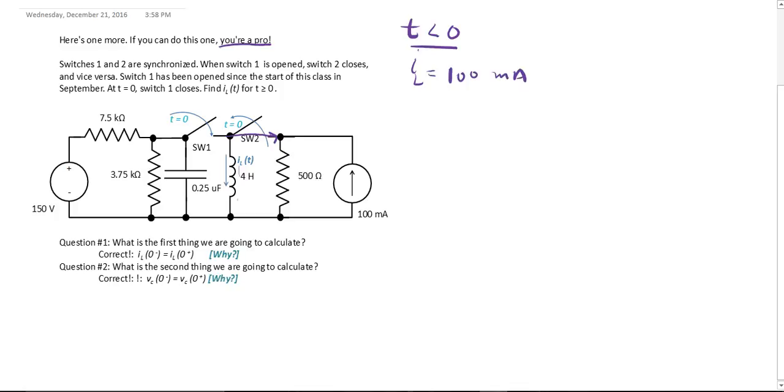And you want to calculate the VC, the voltage drop across the capacitor, is going to be the same as the voltage across this resistor because they are connected in parallel. And this switch was open. So VC equals to, you use a voltage divider equation. 150 times 3.75 divided by 3.75 plus 7.5, which is 11.25.